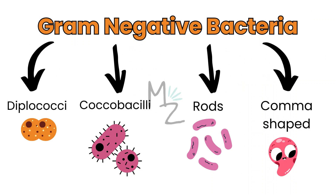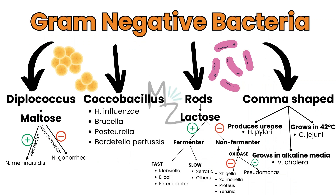Gram-negative bacteria are also subdivided based on shape into diplococci, coccobacilli, rods, and comma-shaped. Diplococci are subdivided based on maltose fermentation — maltose fermenter is Neisseria meningitidis; non-fermenter is Neisseria gonorrhoeae. Coccobacilli include Haemophilus influenzae, Brucella, Pasteurella, and Bordetella pertussis. Rods are subdivided based on lactose fermentation: fast fermenters are Klebsiella, E. coli, and Enterobacter; slow fermenters are Serratia and others. Non-lactose fermenters: oxidase positive is Pseudomonas; oxidase negative are Shigella, Salmonella, Proteus, and Yersinia. Comma-shaped: urease positive is H. pylori; alkaline media grower is Vibrio cholerae; 42°C grower is Campylobacter jejuni.